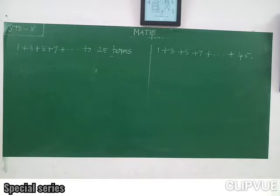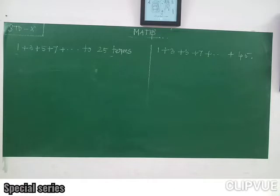You can see that 7 is the 4th term of this series, 5 is the 3rd term, 3 is the 2nd term. Like the 25th term — do you know the value of the 25th term? We don't know, but we can find it. The formula is n = (l minus a) divided by d, plus 1.